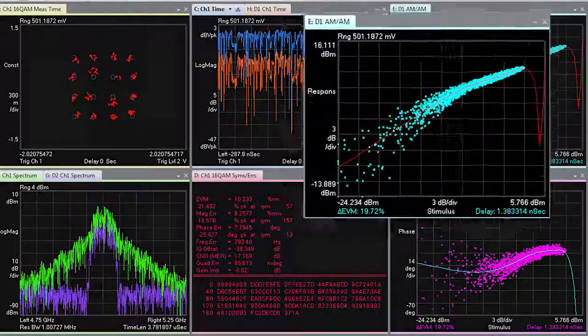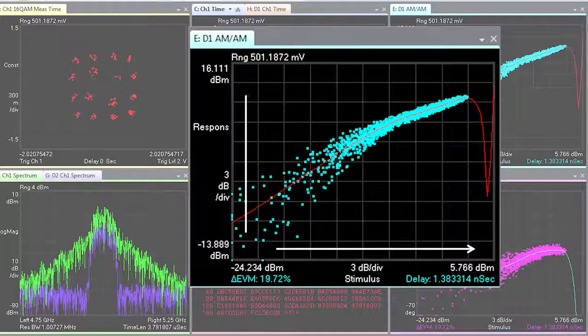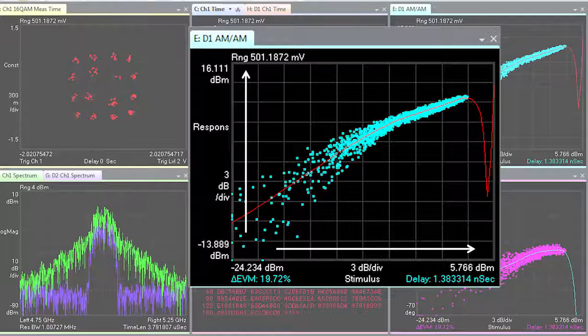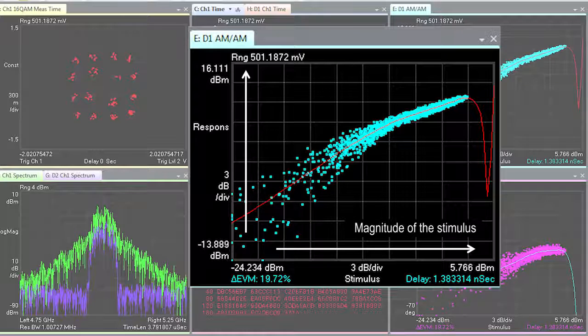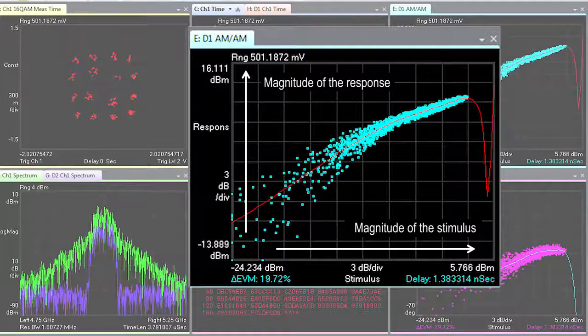AMAM shows the stimulus magnitude versus response magnitude, or input versus output. The X value of the points are the magnitude of the stimulus and the Y values are the magnitude in dBm of the response voltage.